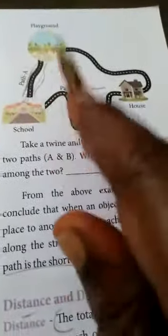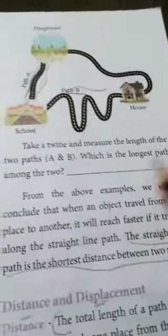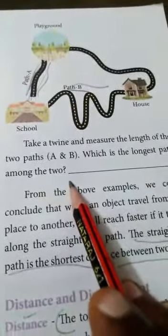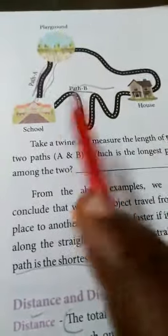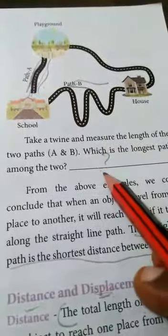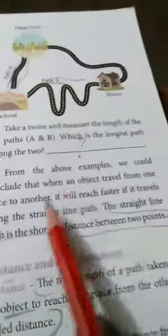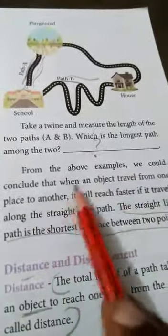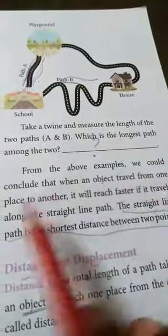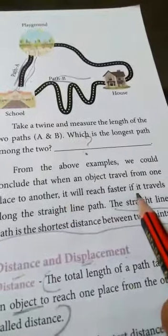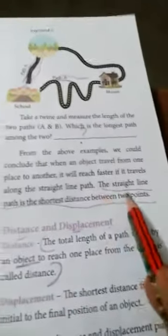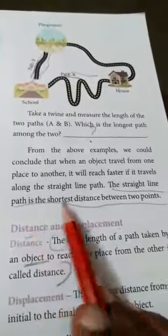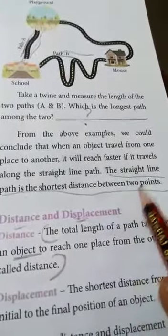Take your twine — it is a measurement tool. Measure the length of the two paths, A and B, and find which is the longest path among the two. From the above examples, we conclude that an object traveling from one place to another will reach faster when it travels along the straight line path, which is the shortest distance between two points.